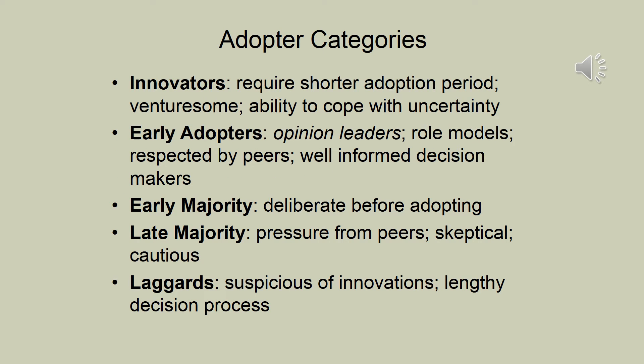Another important component of the diffusion of innovations theory is that they have defined adopter categories. This includes innovators — people that require a shorter adoption period, they're more venturesome and have the ability to cope with uncertainty. These might be people who are the first to get the latest smartphone or gadget. Early adopters are the innovation opinion leaders — they're the role models, respected by their peers, and well-informed decision makers. In a hospital environment, you need to be aware of who these people are and make sure they're on board with practice changes because they influence the behaviors of others.